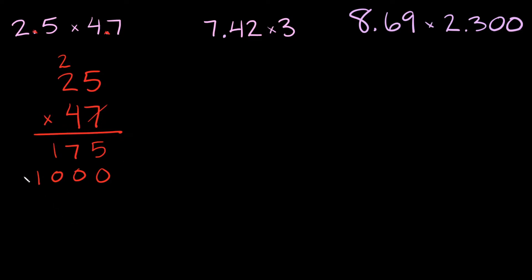Now I'll add up my numbers like normal. So here I have 5 plus 0 which is 5, 7 plus 0 is 7, 1 plus 0 is 1, and then we just have the 1. So bring down the 1.